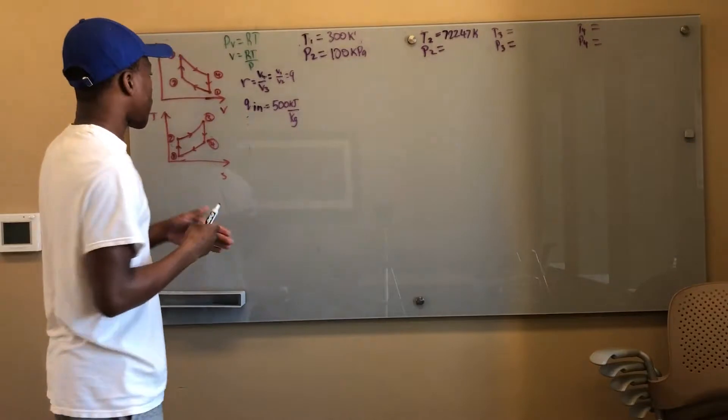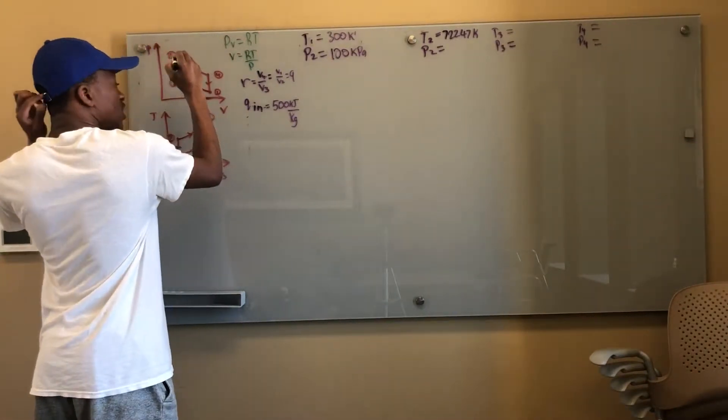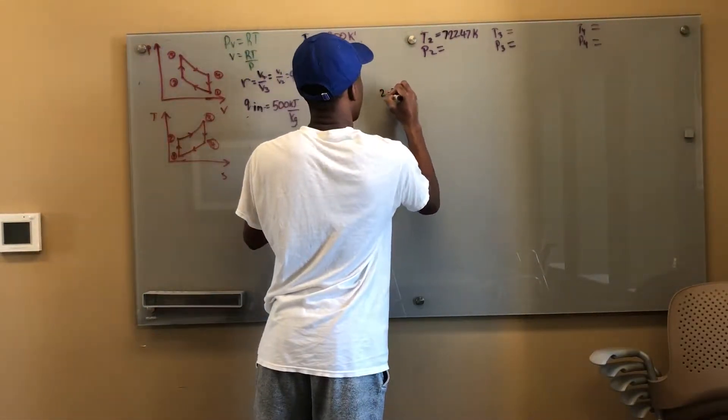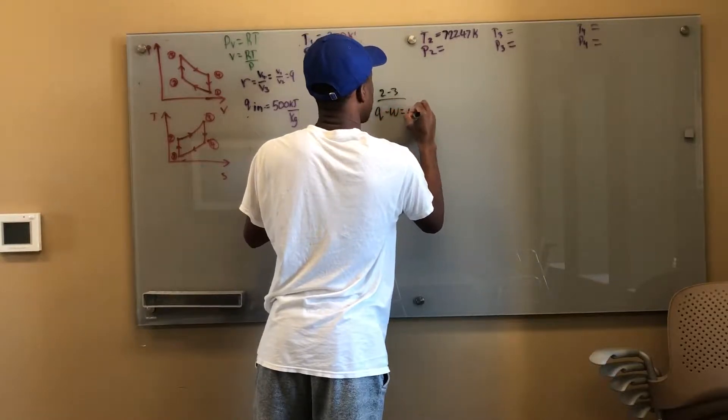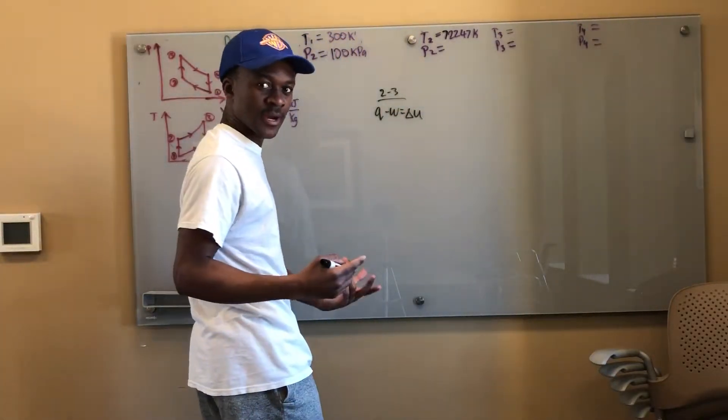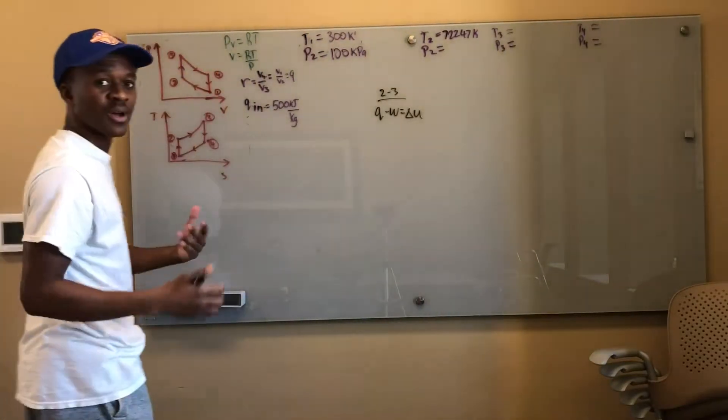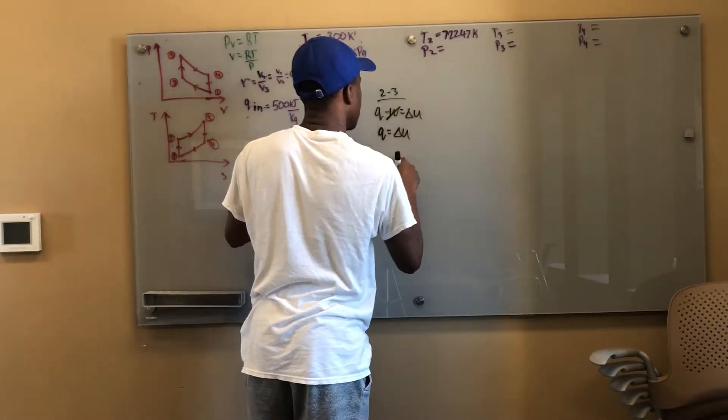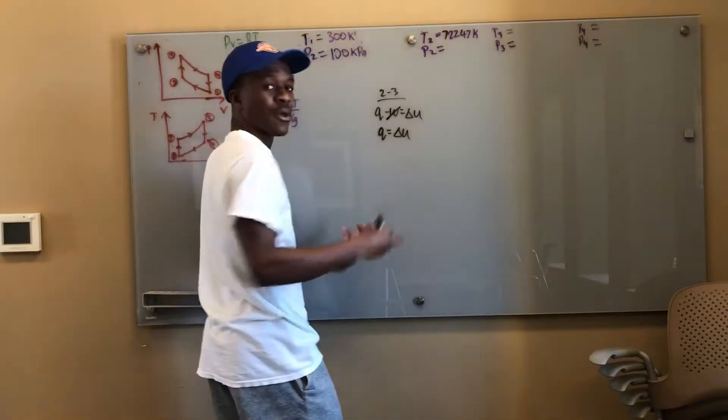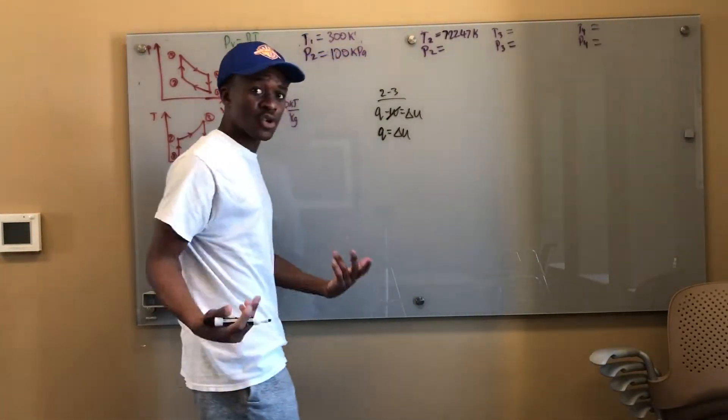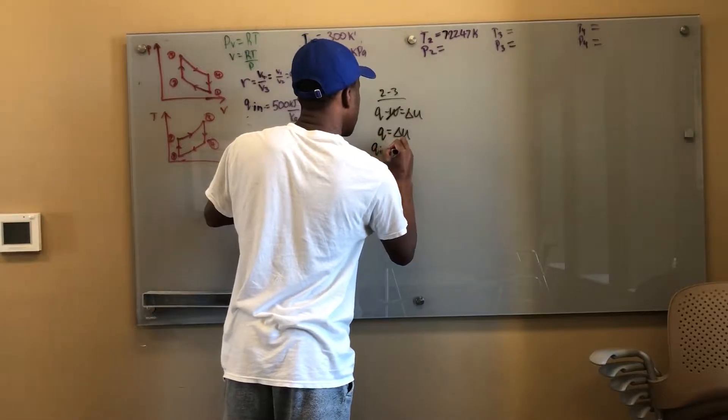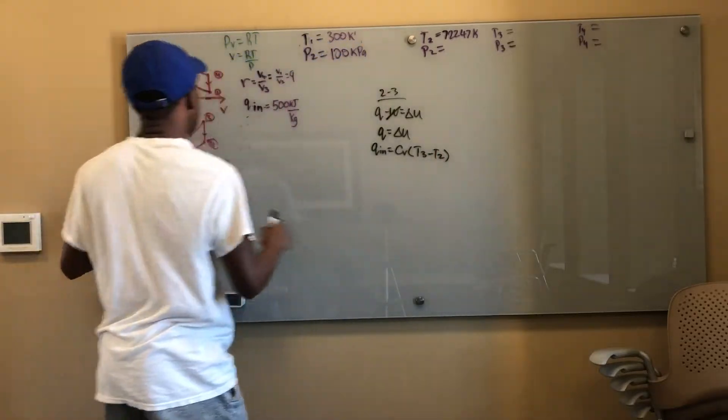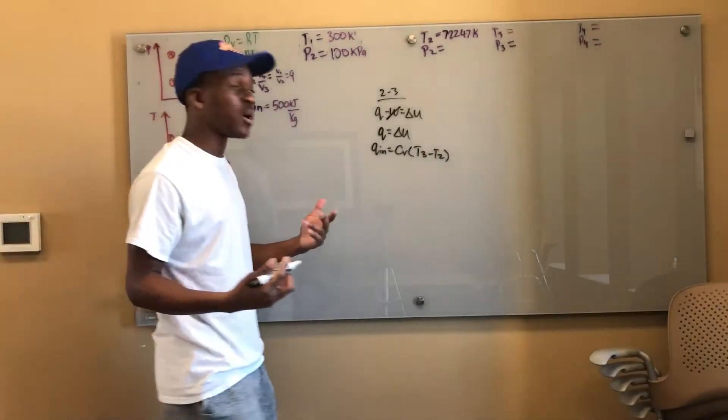Q_in, it occurs from points 2 to 3, constant volume heat addition. So I can say that from 2 to 3, Q minus W equals delta U because there's no work done at that point in time, constant volume for a closed system pdV. No work done, Q equals delta U. This is Q_net, Q_in minus Q_out. We have no Q_out here, so Q_in is equal to delta U which is c_v T3 minus T2.